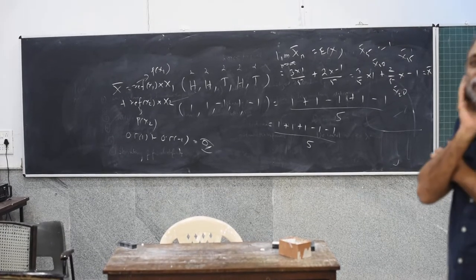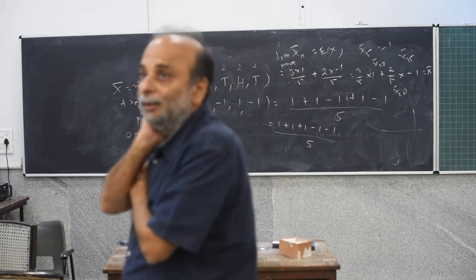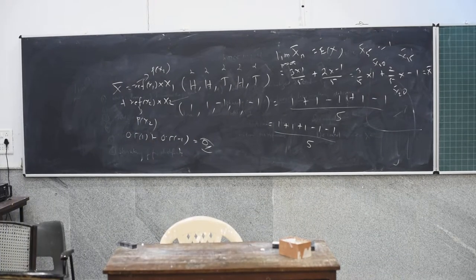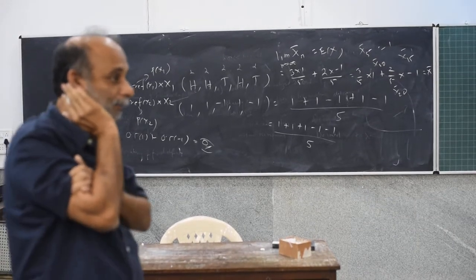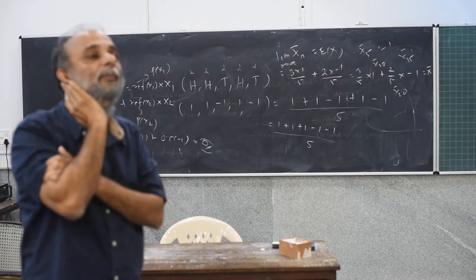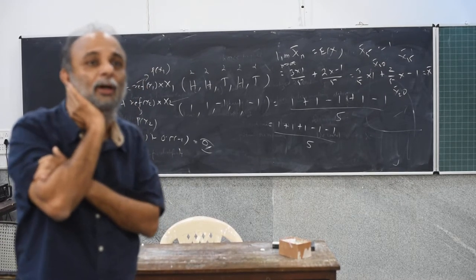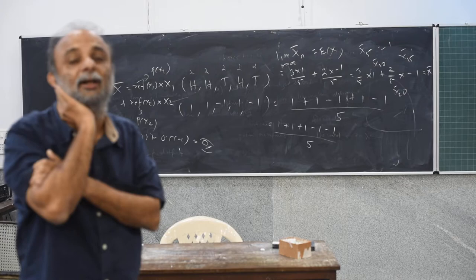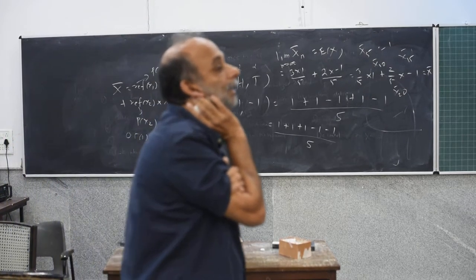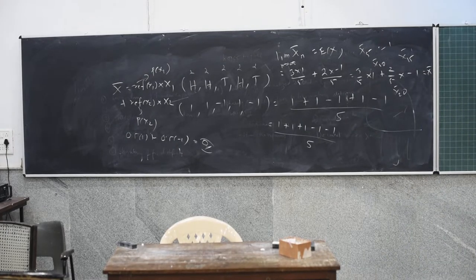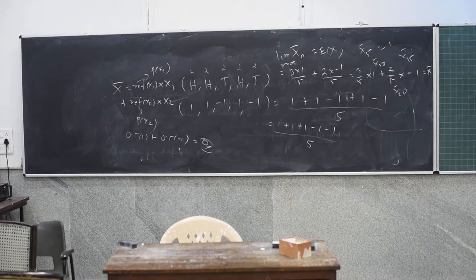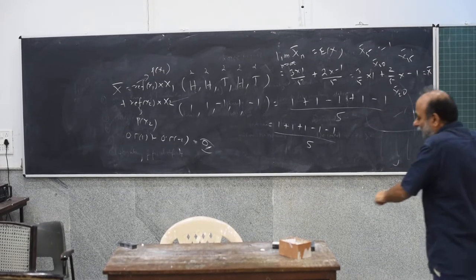Now, everybody is familiar with the arithmetic mean. Nearly all the quantities that we have learnt in class are quantities which are based on arithmetic means. For example, some of you who learned descriptive statistics learned that there are measures of central tendency and measures of dispersion — two different things. How to calculate the variance of x — you have done that in your bridge course.